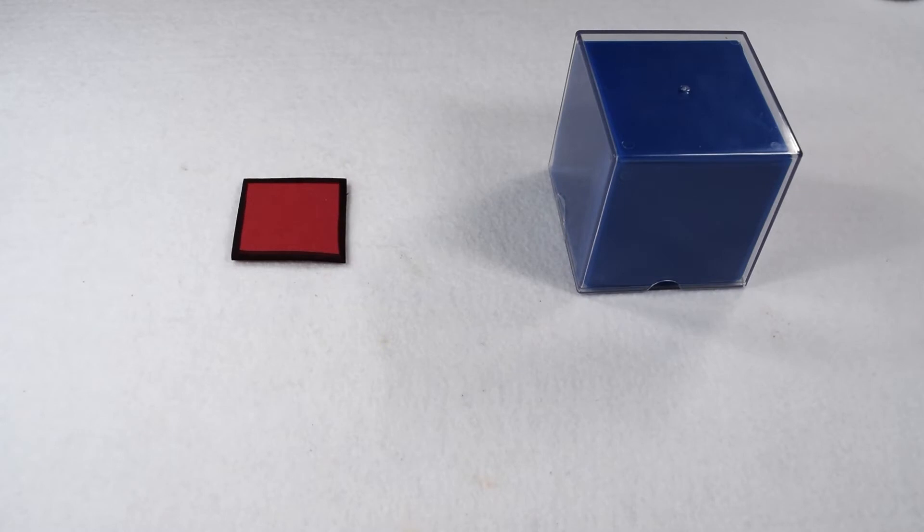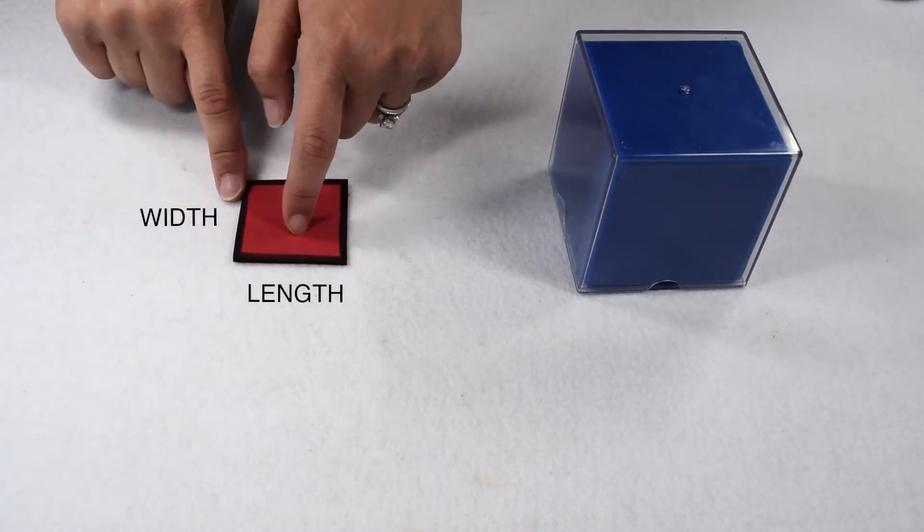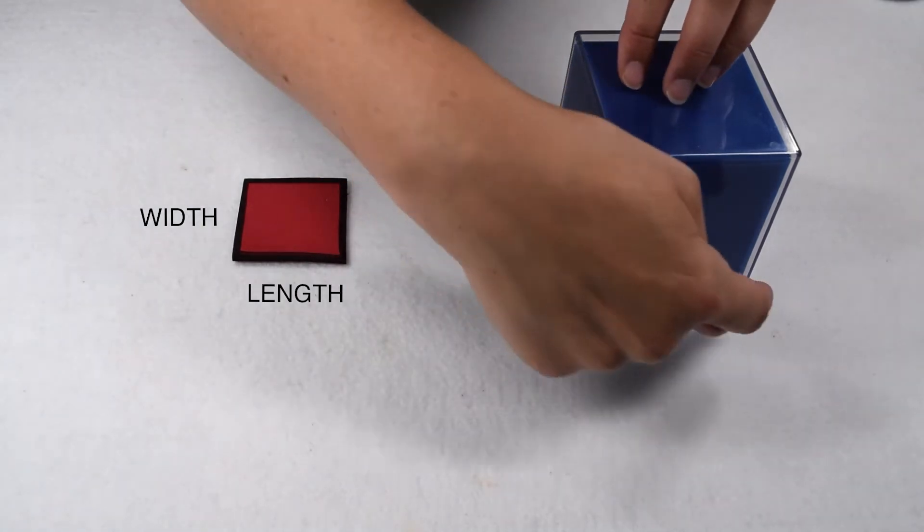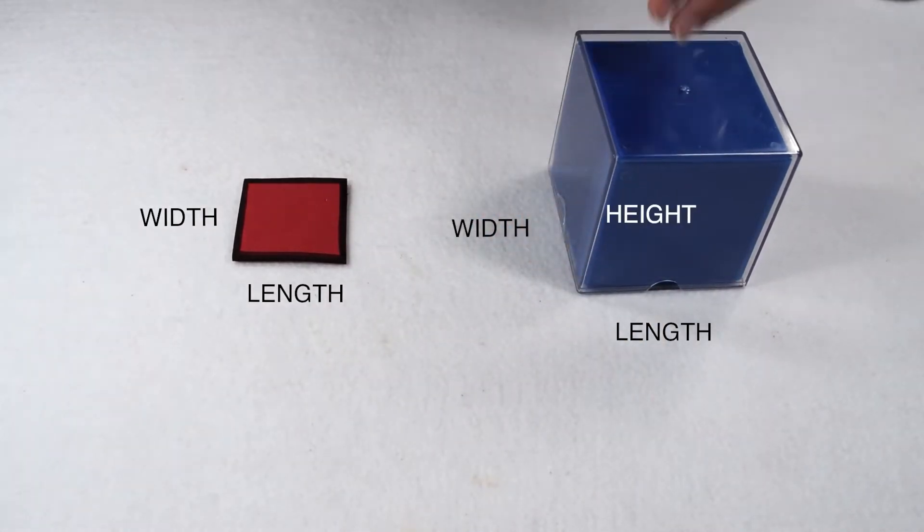With two-dimensional polygons, we're used to measuring generally two dimensions, length and width. With three-dimensional polygons, we need to now measure three dimensions. Generally, those dimensions are going to be length, width, and height.